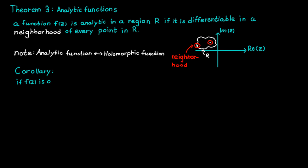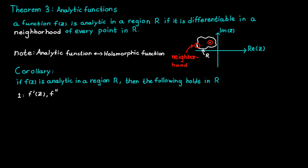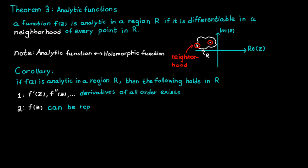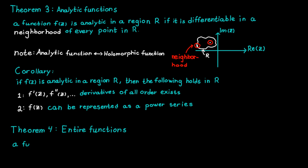If a function is analytic in a region R, then we know that derivatives of all orders exist for the function, and the function can be represented as a power series. I will not prove this right now, but these two statements will be really useful later in the course. The next theorem is about entire functions: a function is entire if it is analytic on the whole complex plane.